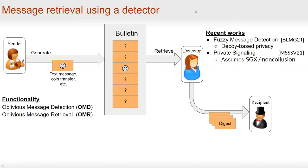For functionality, we want to achieve oblivious message detection (OMD) and oblivious message retrieval (OMR). For detection, only the indices will be sent back to the recipients. For retrieval, the payloads will be sent back to the recipients.